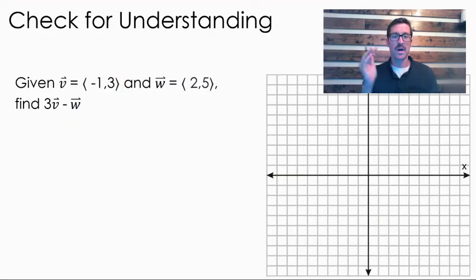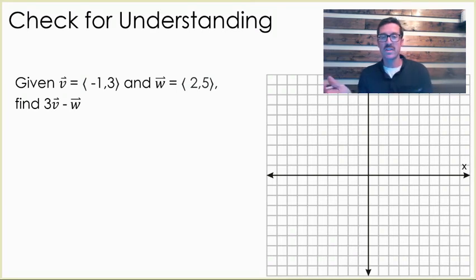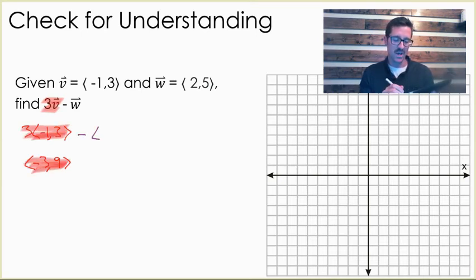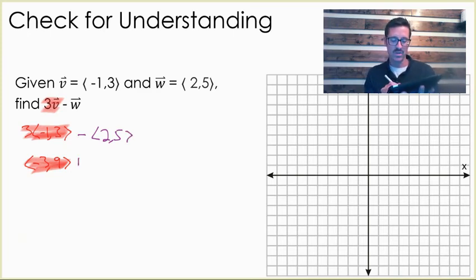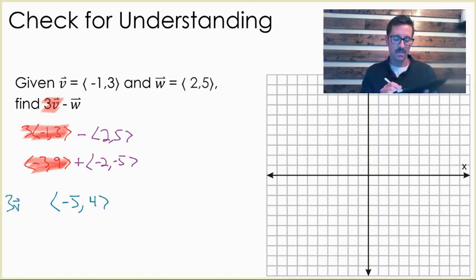Now let's do a quick check for understanding — pause the video and try this one on your own, as it combines two different ideas. I'm going to work it out algebraically first. If I take 3 times vector V, we know that 3V is going to be negative 3 comma 9, so we can take care of that scalar first. Then we're going to do minus W. Recall that to subtract vectors is just like adding a negative, so it's like adding negative 2 and negative 5. When I add these, we get the resultant vector of negative 5 comma 4. That is 3V minus W.